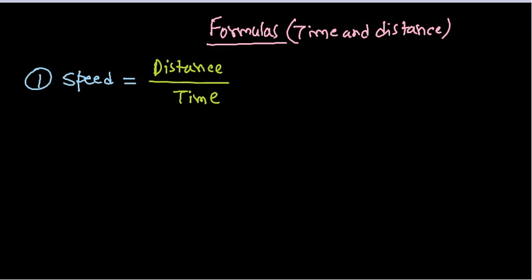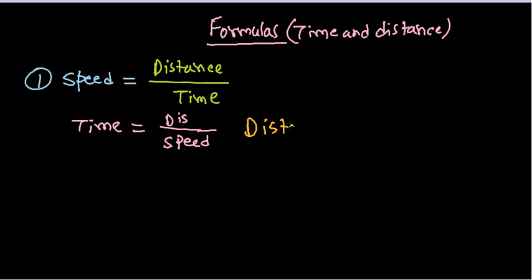Once you understand that equation, you can derive more equations from it. For example, if I need to find time, then time equals distance divided by speed. Similarly, if I want to find distance, distance equals speed multiplied by time. Once you know that speed equals distance over time, everything is simple.